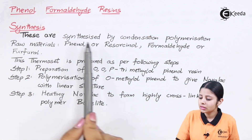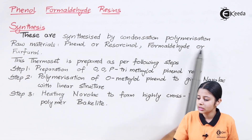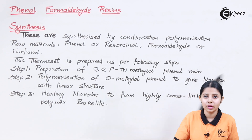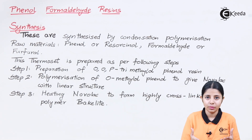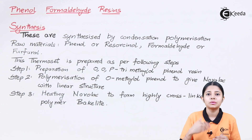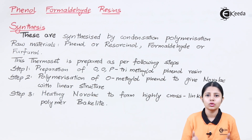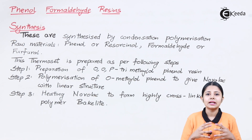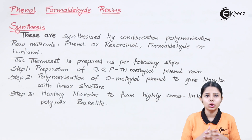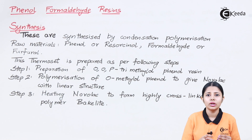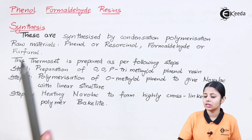Phenol formaldehyde resins are synthesized by condensation polymerization. Condensation is a kind of polymerization — a reaction which helps in making polymers. In condensation polymerization, the two reactants — called monomers — come together and condense. They club together by forming some kind of linkage, and when they form this linkage, they remove some kind of byproduct. This process is known as condensation polymerization, through which this resin is formed.